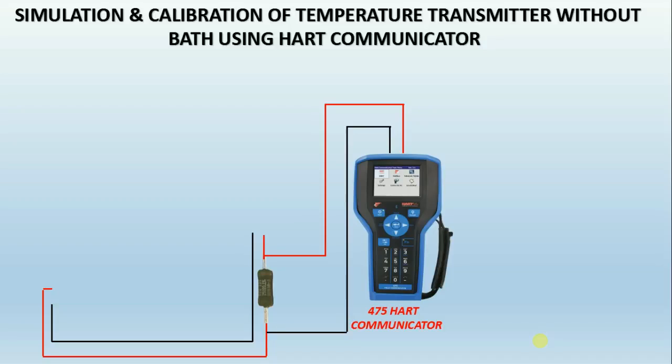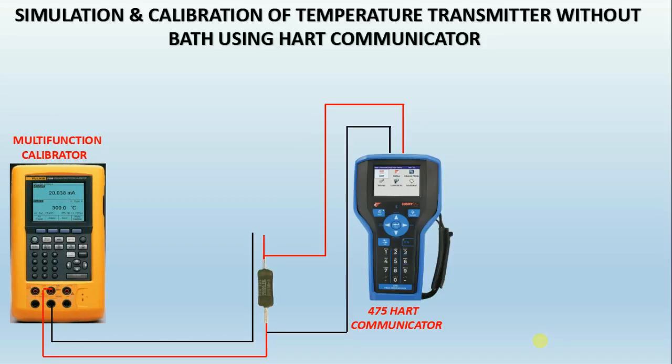Do you know how to simulate and measure using a process calibrator? Process calibrators are battery-powered, handheld instruments that source, measure, and simulate pressure, temperature, and electrical signals. The calibrator lets you troubleshoot, calibrate, verify, and document your work on process instruments.